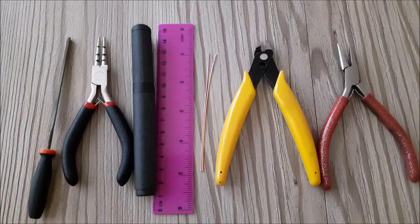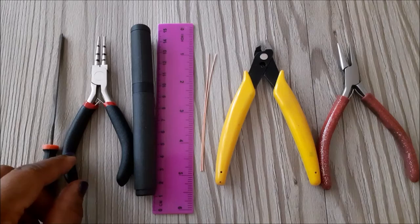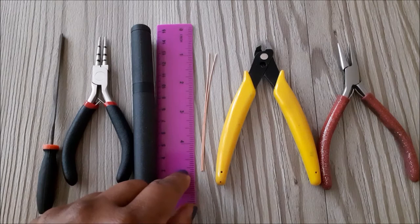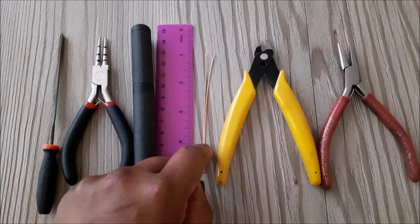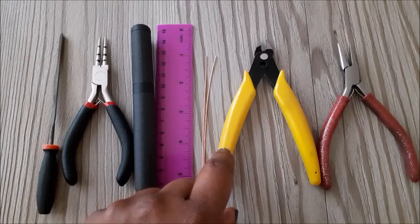I'm going to use a jeweler's file, round nose pliers, a marker to shape the wire, a ruler, two times four inches of 20 gauge half hard copper wire.